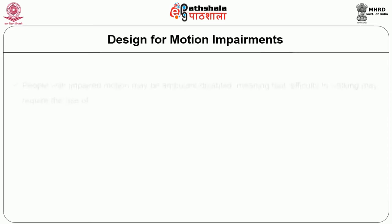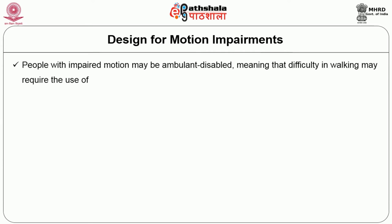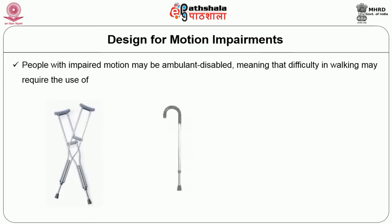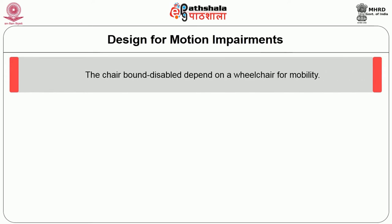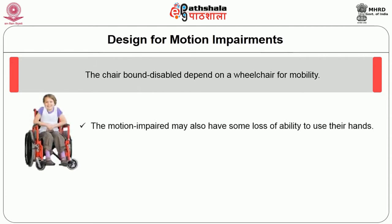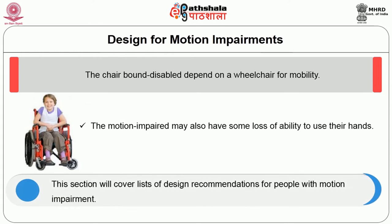Design for motion impairments: People with impaired motion may be ambulant disabled, meaning that difficulty in walking may require the use of crutches, a cane, or a walker. The chair-bound disabled depend on a wheelchair for mobility. The motion impaired may also have some loss of ability to use their hands. This section will cover a list of design recommendations for people with motion impairment.